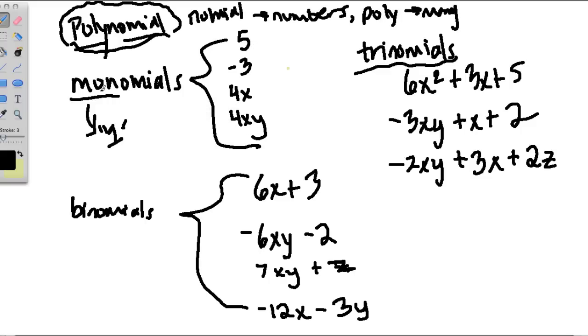Monomials are the first group. Mono means one, so each of these monomials have one term. The numbers 5 and negative 3 are examples of monomials. 4x is also a monomial.